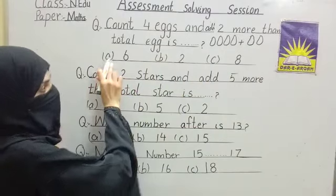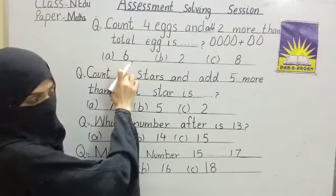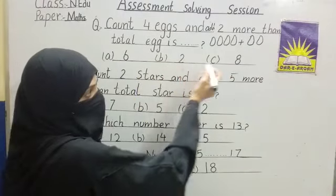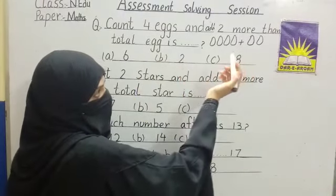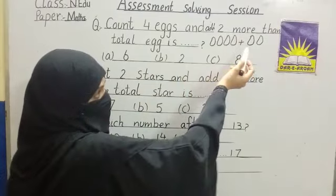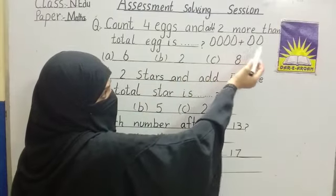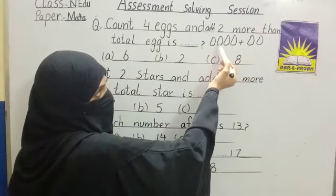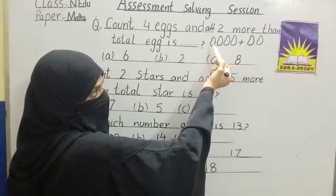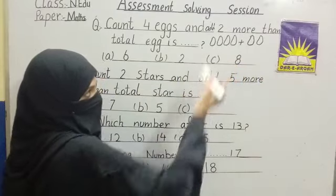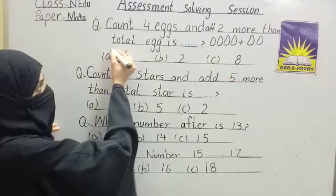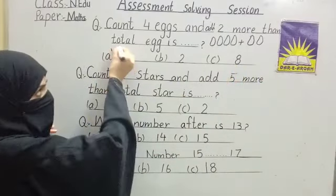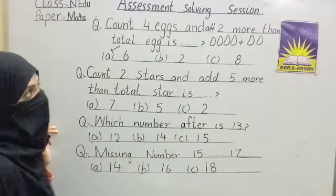Let's see the options. Option A: six. Option B: two. Option C: eight. How many total eggs? One, two, three, four, five, six. Yes, very good — six. Total eggs is six. Tick option A.